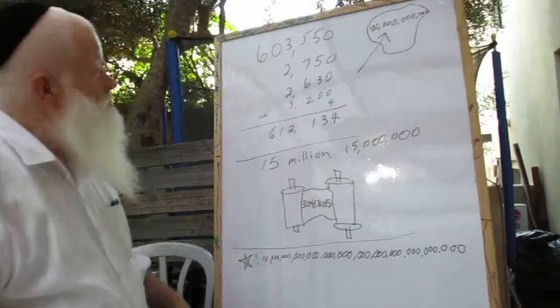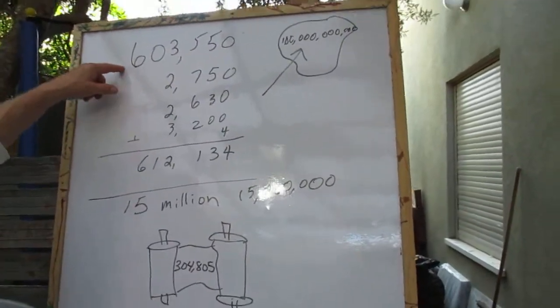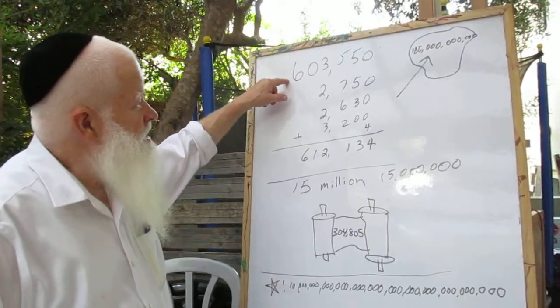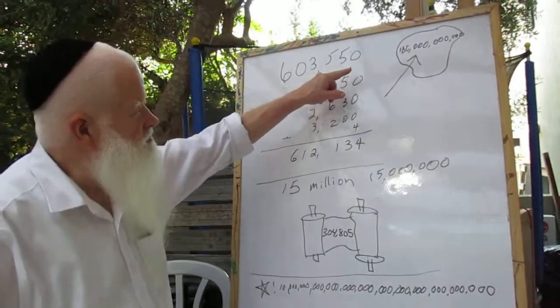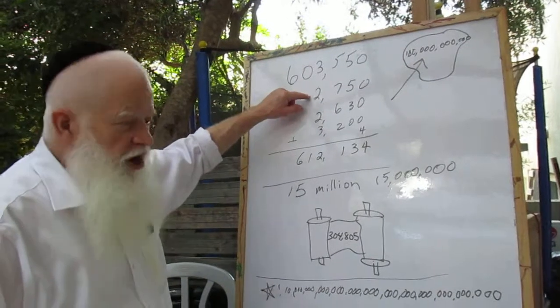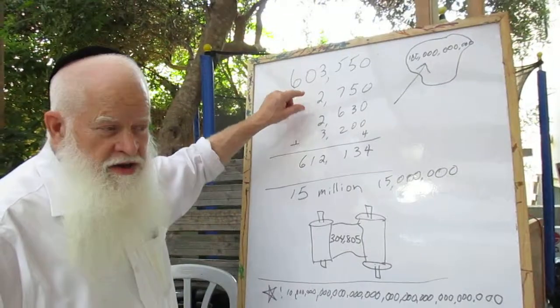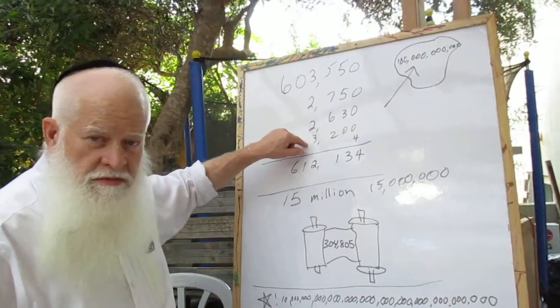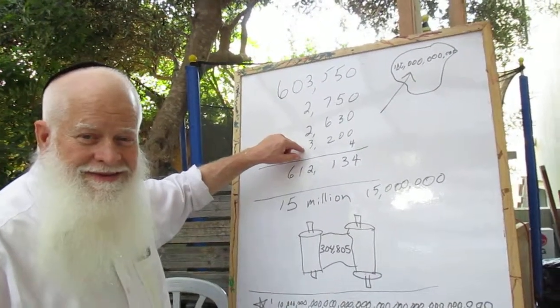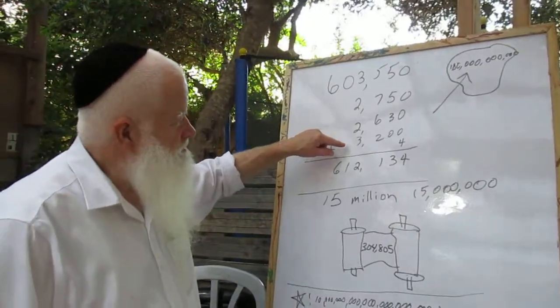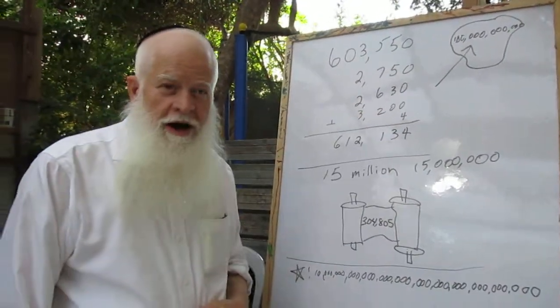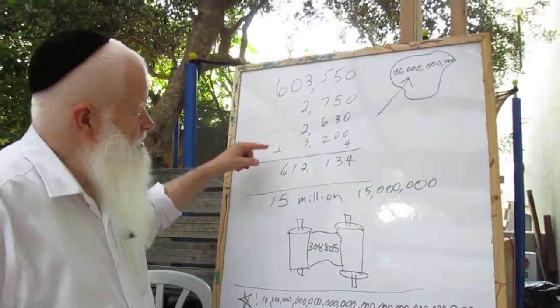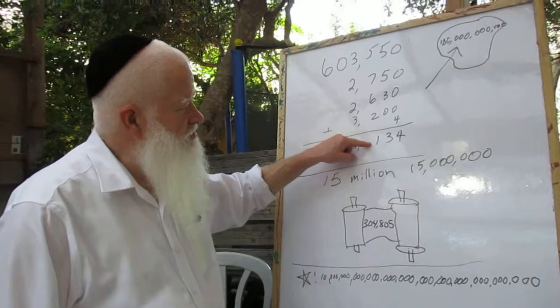So here's the numbers here. Last week we counted all the Jewish people. Males 20 years of age and up. And it was 603,550. There are three groups of Leviim that we count this week. There's Kohar, Mirari, and Gershon. So these are their numbers. Plus four more. Ha ha. Moshe, Aron, and Aron's two sons. So we end up with 612,134.